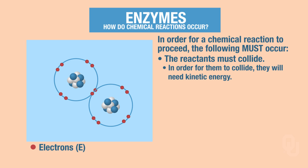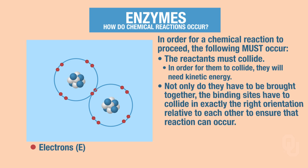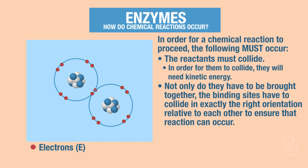In order for a chemical reaction to proceed, the following must occur. The reactants have to collide — these two atoms have to collide. In order for them to collide, they have to have kinetic energy. Not only do they have to be brought together and collide, but the binding sites have to collide in exactly the right orientation relative to each other to ensure that a reaction can occur.